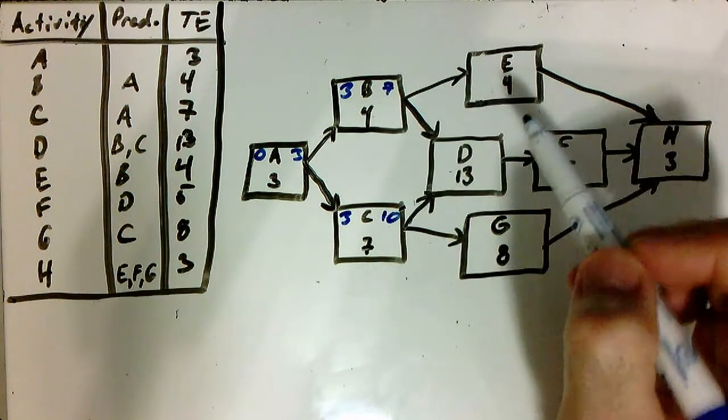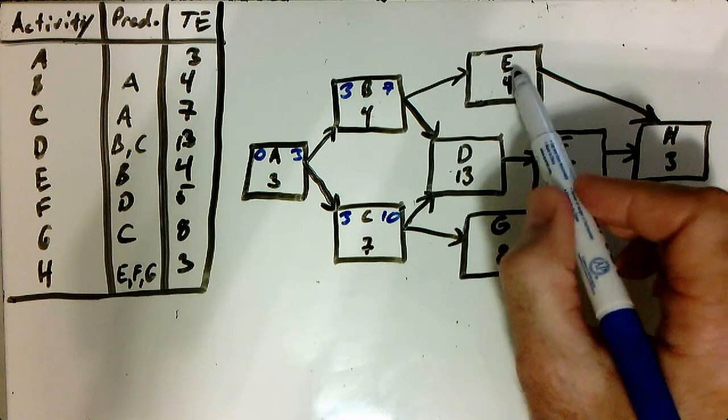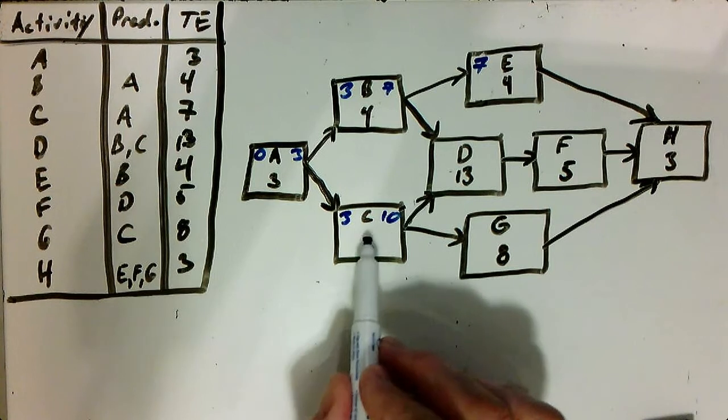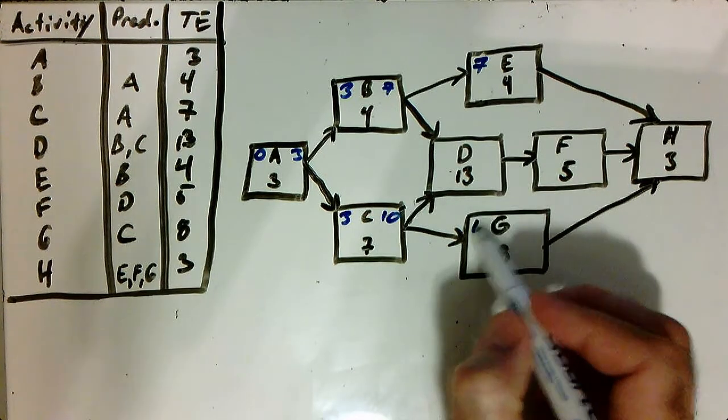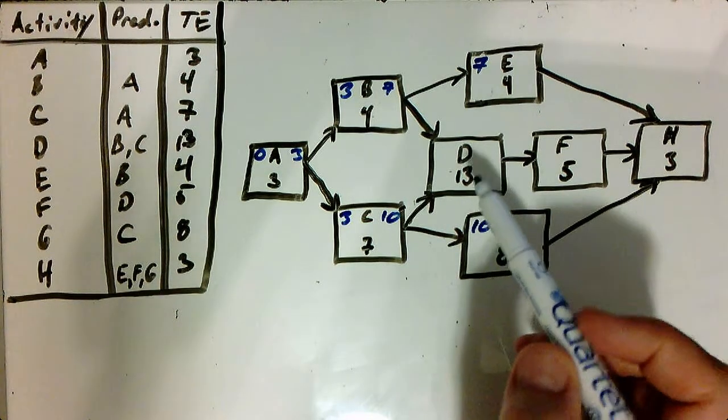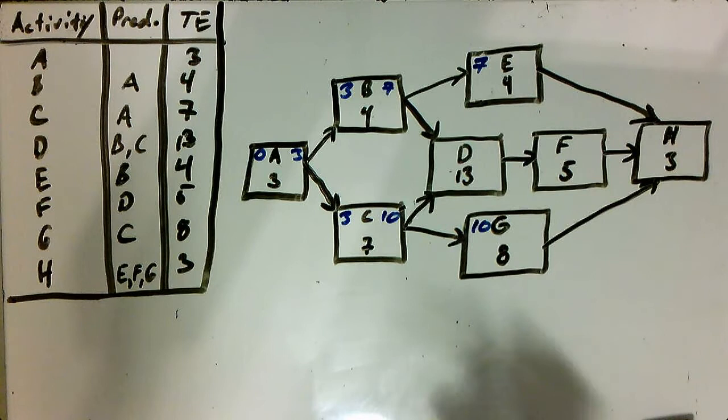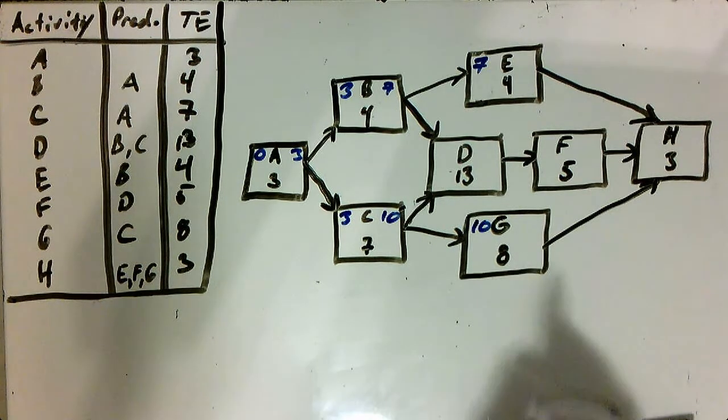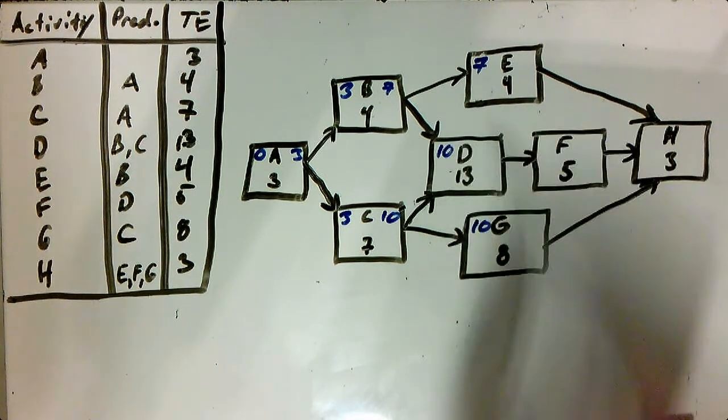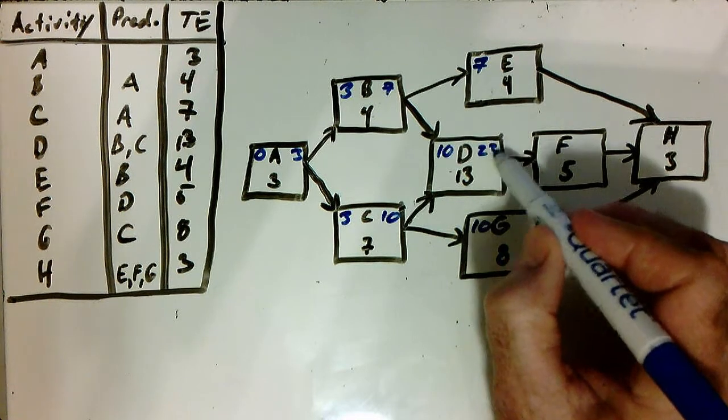So here's our early finish again. Now for seven, E only takes this one, so we can move that to there. G only takes C, so we can move the ten to G. Now D, this is where we have to make our first decision. Do we take the seven from B or do we take the ten from C? Well, when we're moving forward, we want big. We want the big number. So we take the ten. It's that simple. Ten plus thirteen, twenty-three.